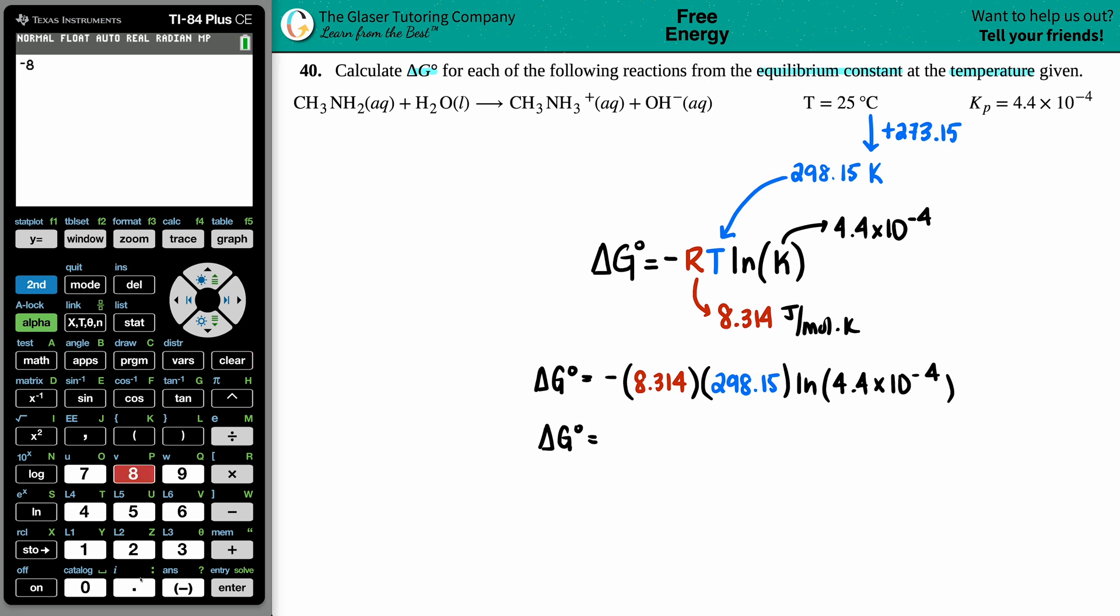Negative 8.314 times the 298.15, and I'm going to times by my natural log, which is over here. Now, I have a number in scientific notation. So, what I'm going to do is I'm going to say 4.4, and then I'm going to say second comma. The E button comes up, the E.E.